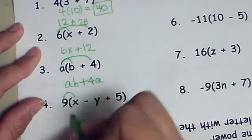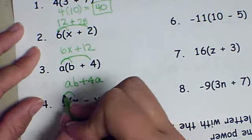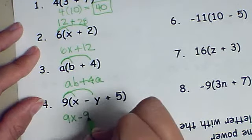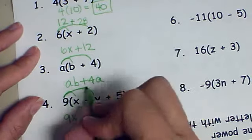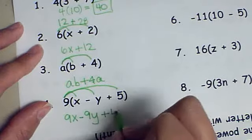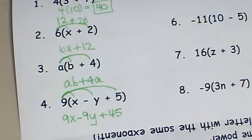If I multiply 9 times x I get 9x. And then 9 times negative y is negative 9y. And then 9 times 5 is 45. I multiply the numbers and I keep the signs in the middle the same.